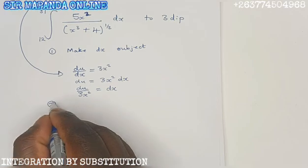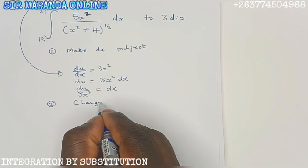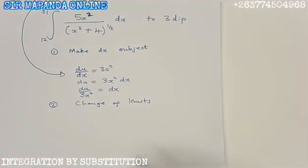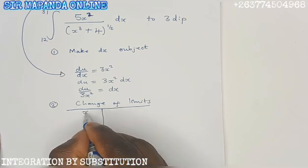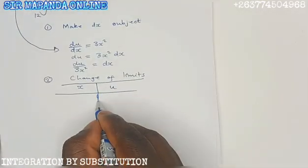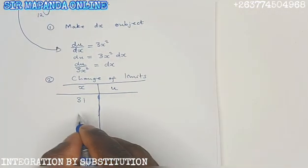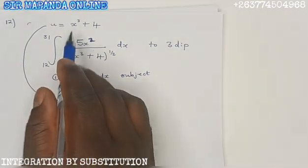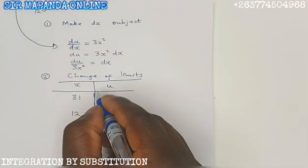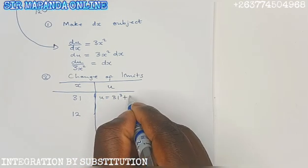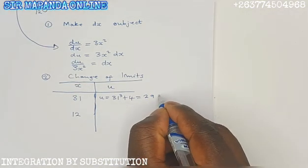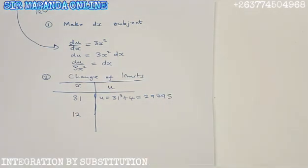Then we move on to stage number 2. Stage number 2 is the stage of change of limits. We want to change the limits from x to u. I'm going to put a table. The original limits of x are going to be changed to find the new limits for u. Remember, we have 31 and 12. To find the new limits for u, we are going to put 31 into the given substitution u equals x cubed plus 4. You get u equals 31 cubed plus 4. 31 cubed plus 4 you get 29,795, which is the new upper limit.